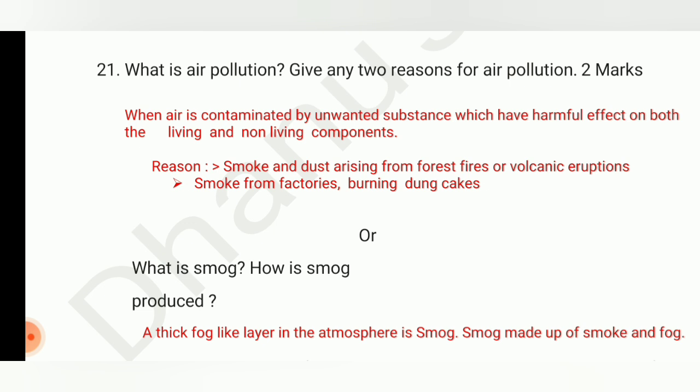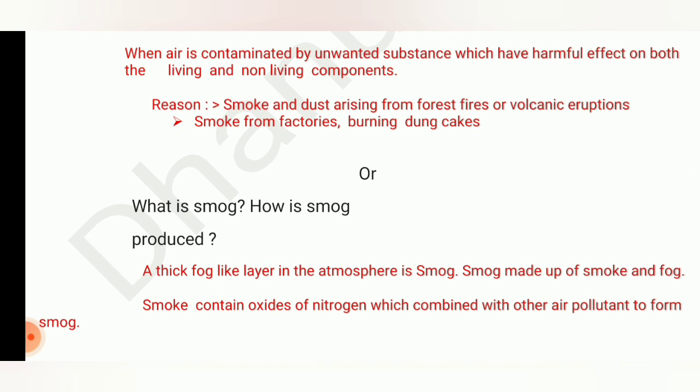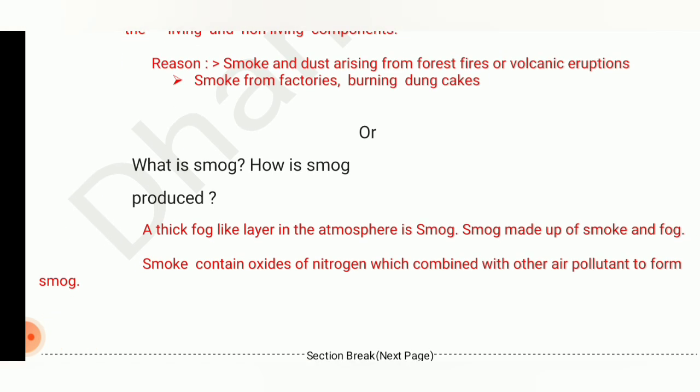In the exam, when they ask for two reasons, you only need to write two — even if you know more. For example, if they ask for two causes, two effects, or two characteristics, write only two. The reasons for air pollution are: smoke and dust arising from forest fires or volcanic eruptions, and smoke from factories burning dung cakes.